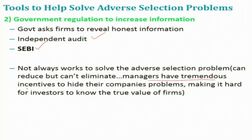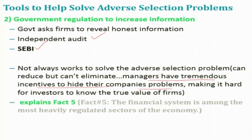Managers have tremendous incentives because, as we have seen in a previous session, stock price is mainly a function of dividends, which means profit. Accordingly, managers will try their level best — they have incentives to hide some of the company's problems. Not everything can be captured by the balance sheet. All these explain Fact Number 5, which says that the financial system is among the most heavily regulated sectors of the economy, because of government regulation to increase information and reduce asymmetric information.